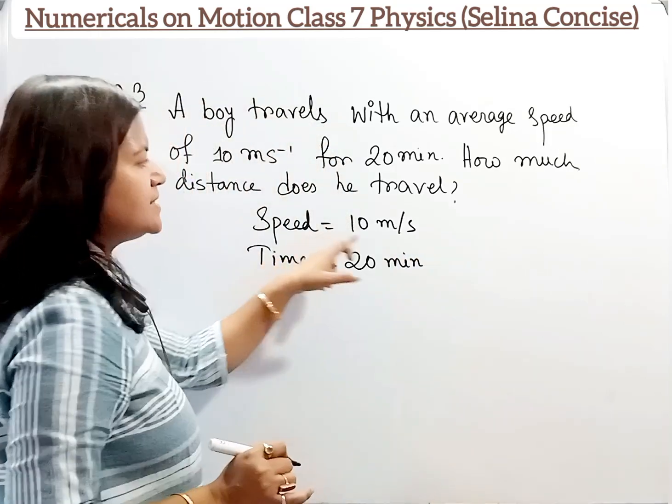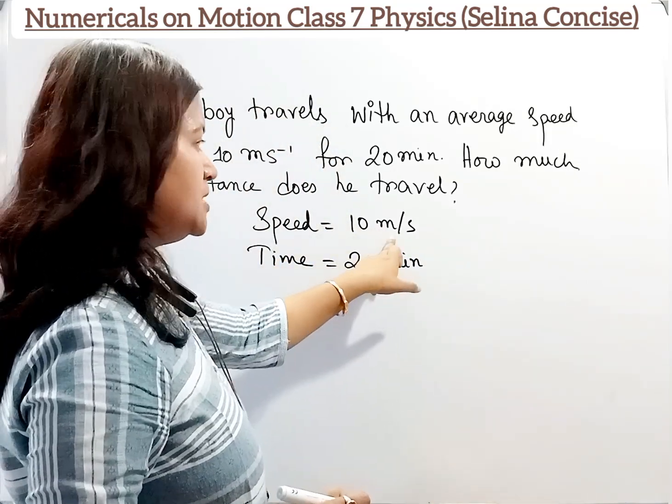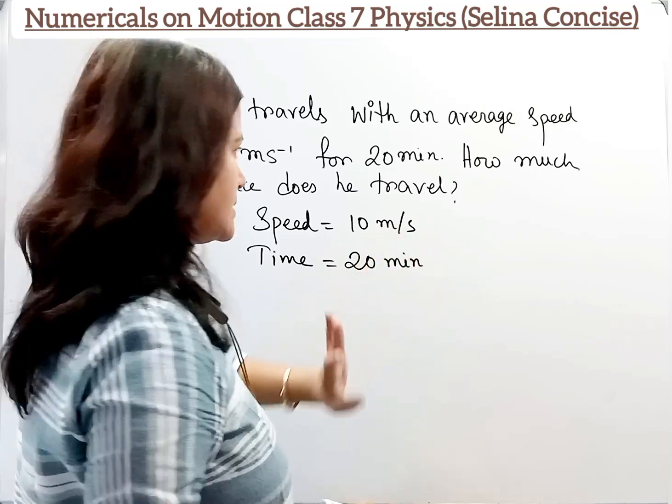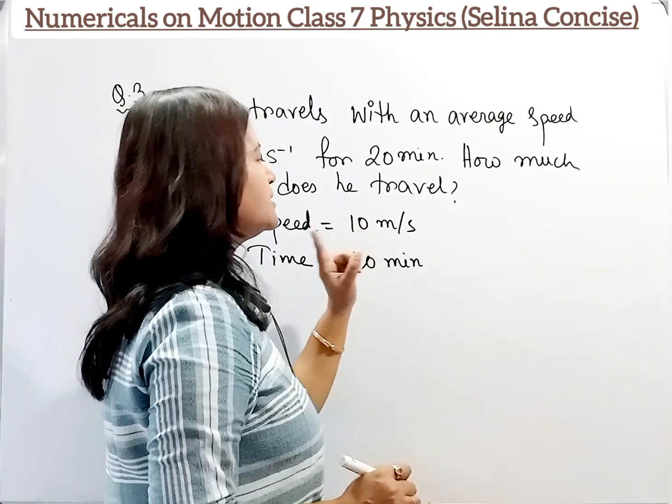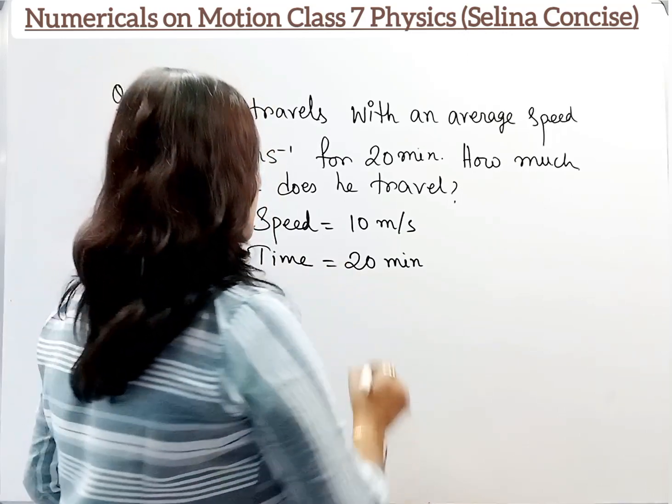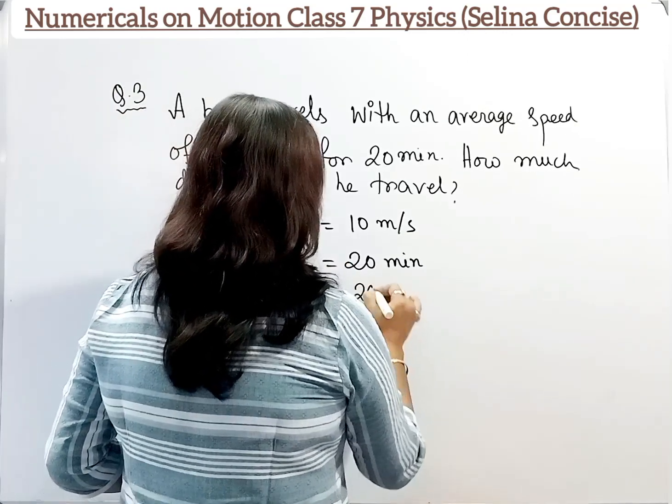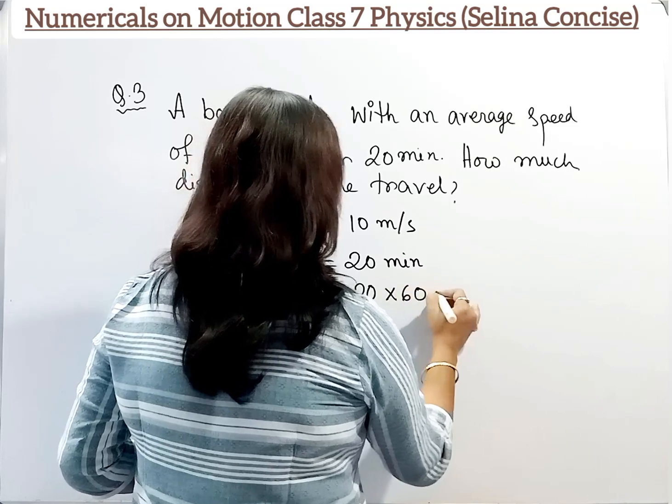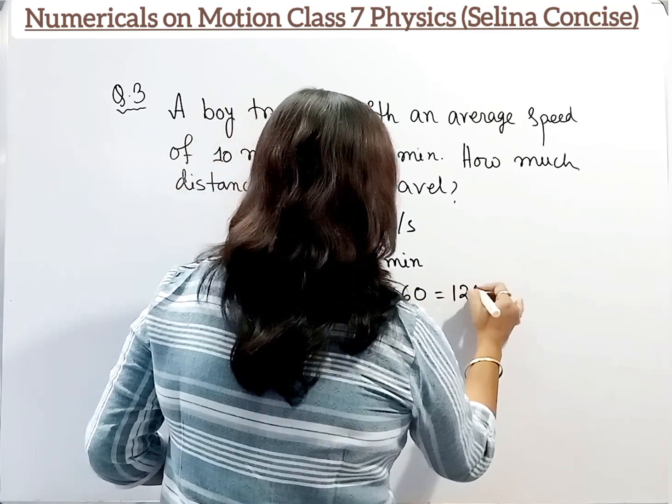Now the speed is in meters per second. So we have to convert time from minutes to seconds. So 20 into 60 equals 1200 seconds.